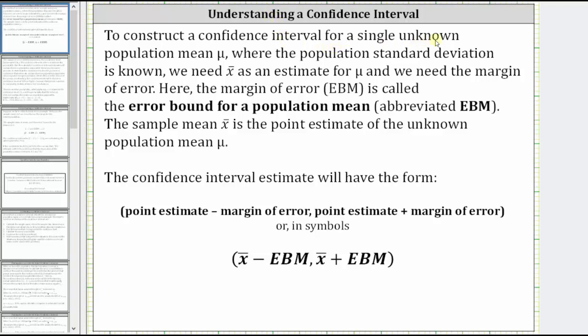To construct a confidence interval for a single unknown population mean μ, where the population standard deviation is known, we need x̄, the sample mean, as an estimate for μ, and we need the margin of error.